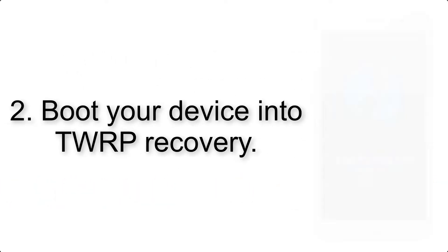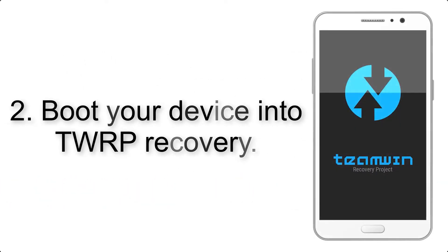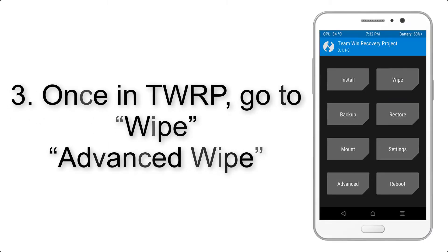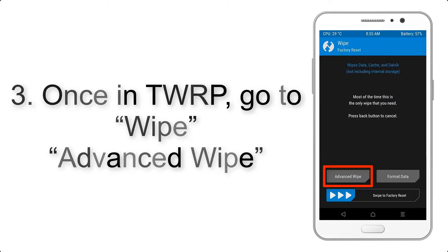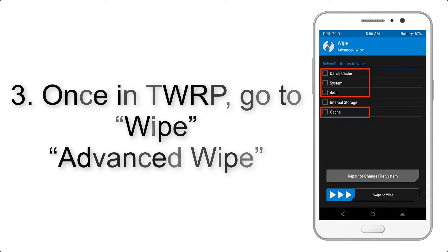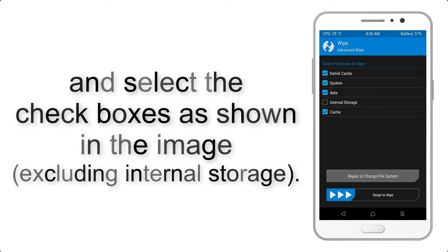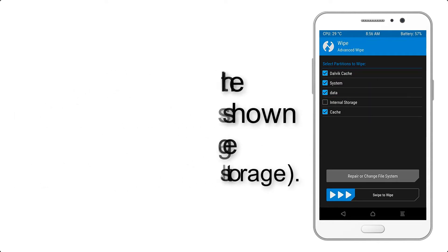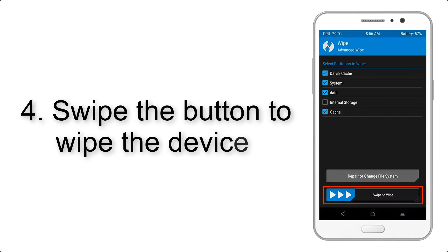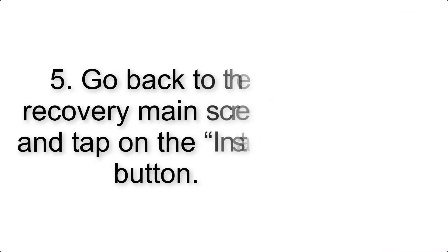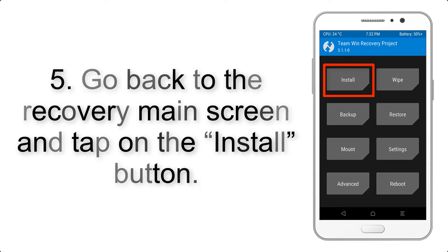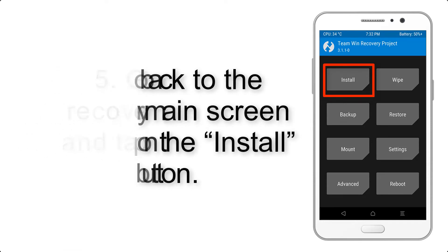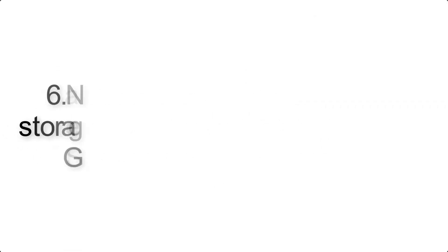Step 2: Boot your device into TWRP recovery. Once in TWRP, click on Wipe, then Advanced Wipe, and select the checkboxes as shown in the image, excluding internal storage. Step 4: Swipe the button to wipe the device.